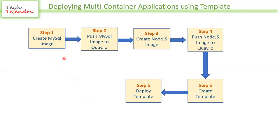The steps we are going to follow are: Step 1 — create the MySQL image. Step 2 — push that MySQL image into the quay.io image registry. Step 3 — create the Node.js image, which includes the Node.js runtime and our application code. Step 4 — push the Node.js image into quay.io. Step 5 — the most important one — create the template and then deploy the template.